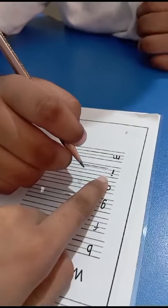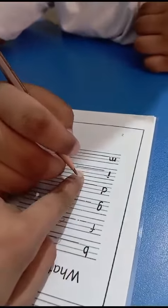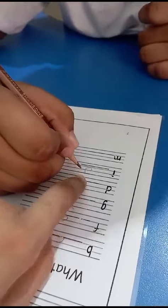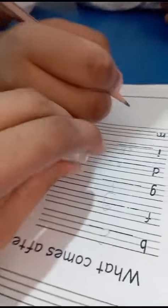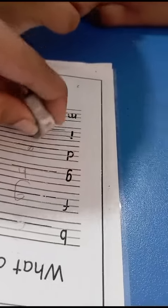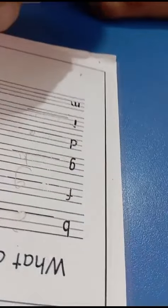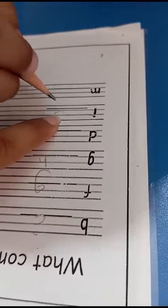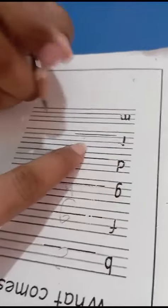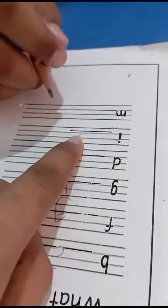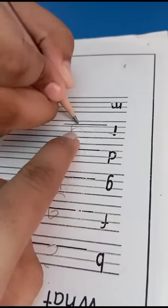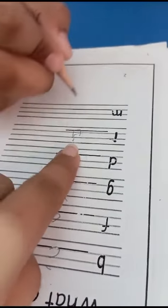I, J — very good. Write J nicely, small J. Sufyan, small J, start from here. Sufyan, look down. Write J, small J — very good. Dot, very good. What comes after M?